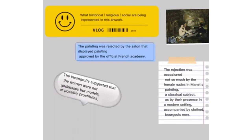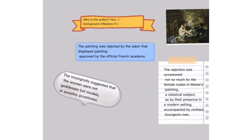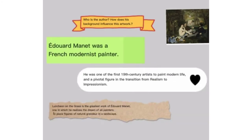What historical, religious, or social elements are being represented in this artwork? The painting was rejected by the Salon that displayed paintings approved by the official French Academy. The rejection was caused not so much by the female nudes in Manet's painting — a classical subject — but by their presence in a modern setting accompanied by clothed men. The incongruity suggested that the women were not goddesses but models, or possibly prostitutes.